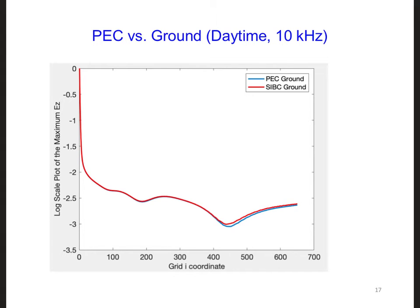Here's a comparison of the results when the ground is considered a PEC versus an SIBC. Here, the SIBC sigma is equal to 0.01 Siemens per meter.